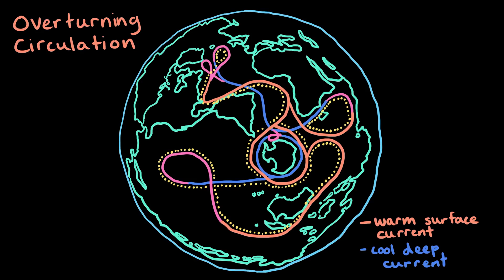Like the currents in the gyre circulation, the currents in the overturning circulation also carry and disperse heat energy all around the world.